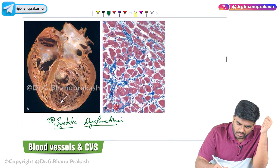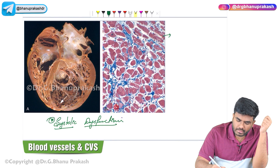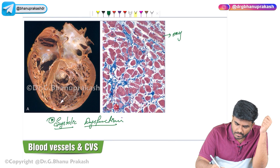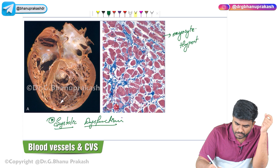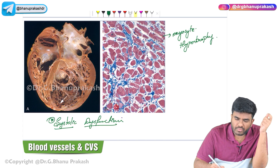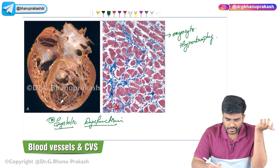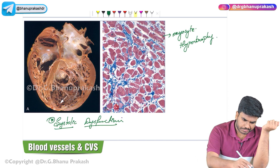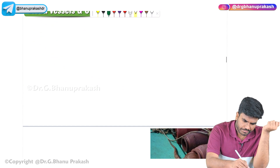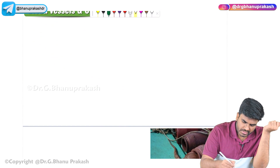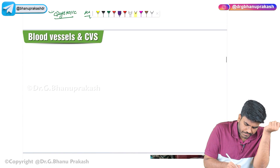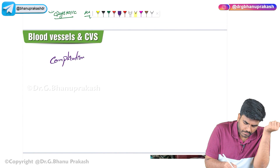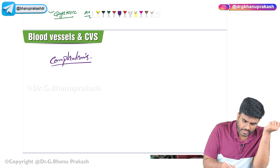Upon microscopy, myocyte hypertrophy can be seen along with some amount of interstitial fibrosis. Now, what are the complications of dilated cardiomyopathy?